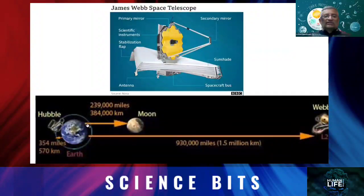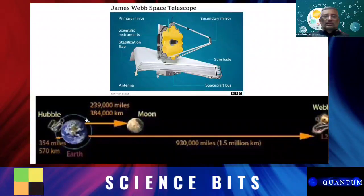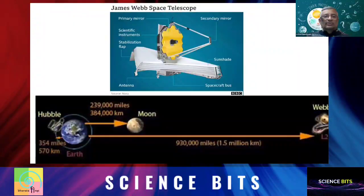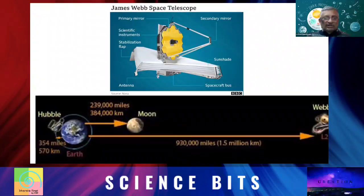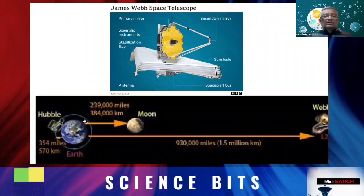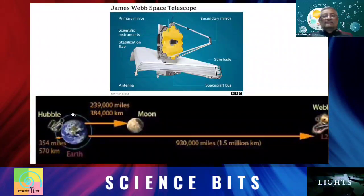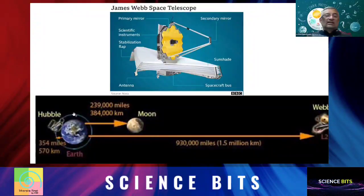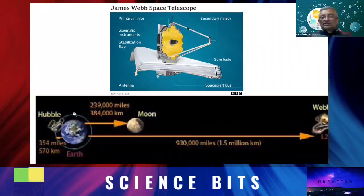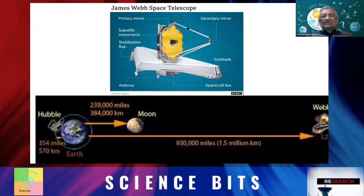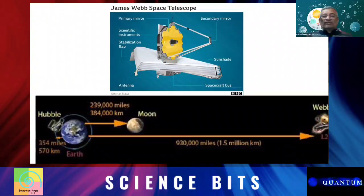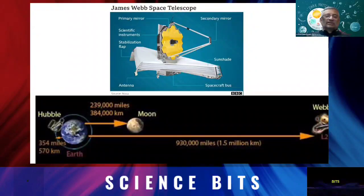When Hubble is a space telescope which goes around the Earth at about 570 km in orbit around the Earth, the Webb Telescope is going to be placed in a place in space called L2, Lagrangian point 2. This place is about 1.5 million kilometers away from here.